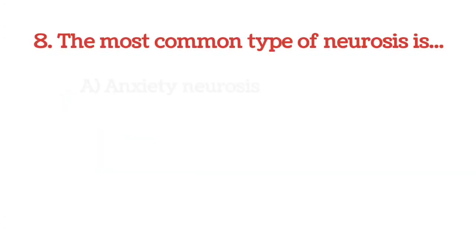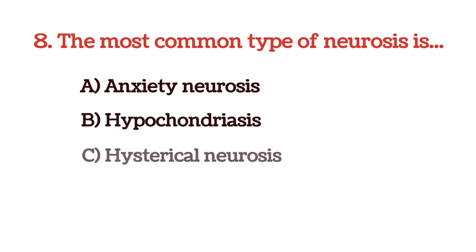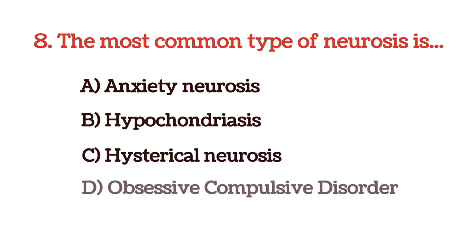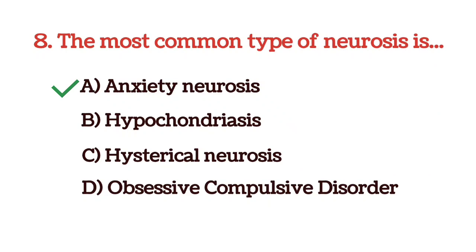The most common type of neurosis is — options are anxiety, hypochondriasis, hysterical neurosis, and obsessive compulsive disorder. The answer is option A, anxiety neurosis. Neurosis is a mental illness that causes strong feelings of fear and worry. The most common type is anxiety.